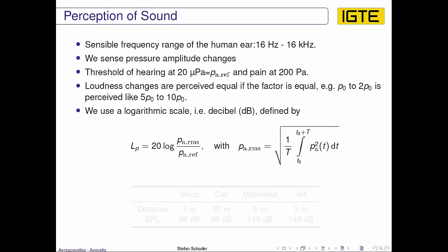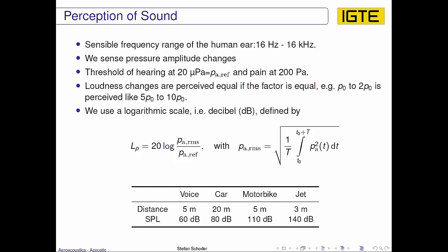For typical ranges where we experience sound, we have the voice at 5 meter distance at about 60 dB, a car driving by at 20 meters at about 80 dB, a motorbike at 5 meter distance at about 110 dB, and a jet about 3 meters away at about 140 dB.